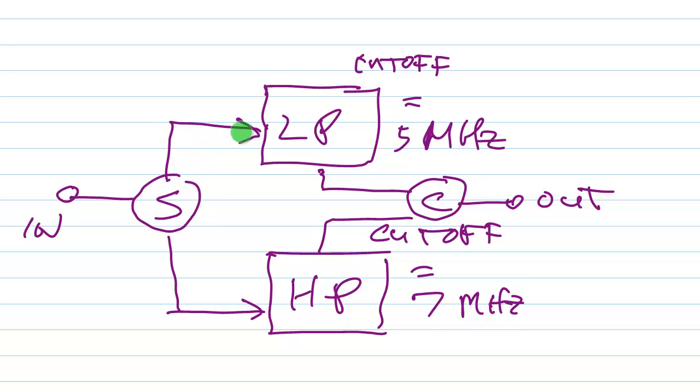So the signal goes in, gets divided equally, goes through the low pass filter and the high pass filter at the same time. Then the output of those filters goes through the combiner. So we go through the splitter, we split the signal like that, the two filters, the combiner, and the output.